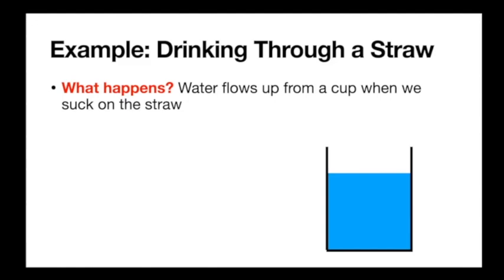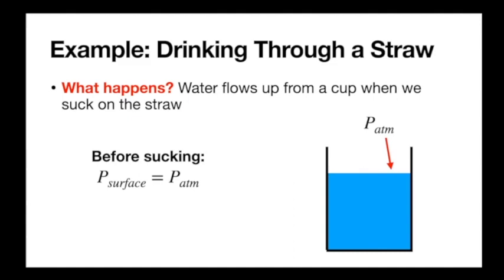So let's do a real-life example — a very simple one we've encountered a lot in our lives but probably haven't thought much about. This is a nice example of what you can do with the tools you learn in this class. Being able to look at physical systems, have some intuition, and piece together what's happening is a really vital tool in any science or in life. Let's take a look at drinking through a straw — what's happening in terms of our fluid system equations when we put a straw in a cup and drink through it?